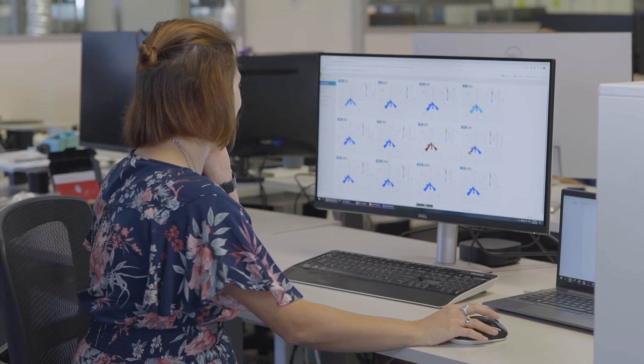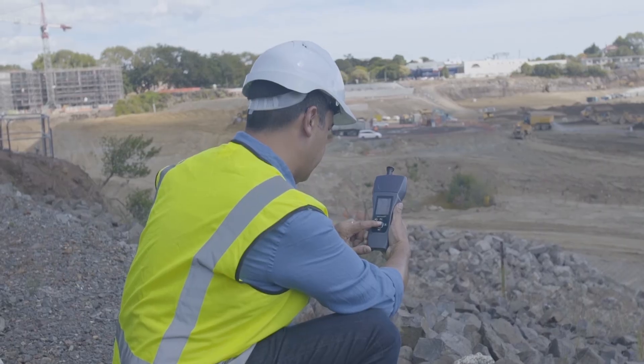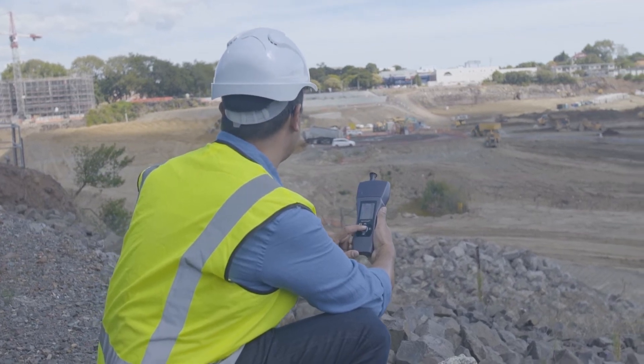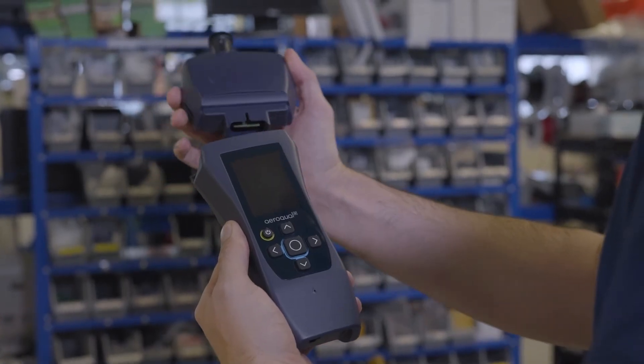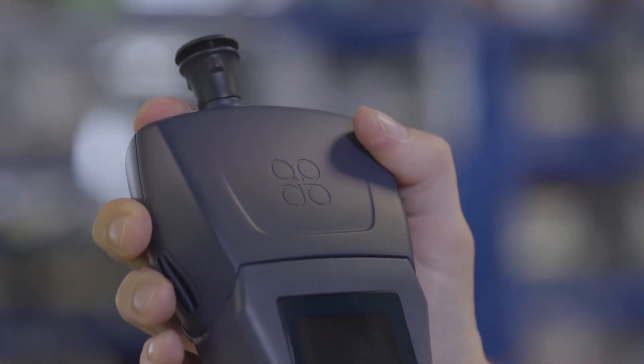Not only does Ranger save you time and money by cutting down on site visits, it also reduces the time it takes to get your sensors calibrated from 3 weeks to a matter of seconds. Simply remove the existing sensor head and insert a freshly calibrated one that you will have received ahead of time.